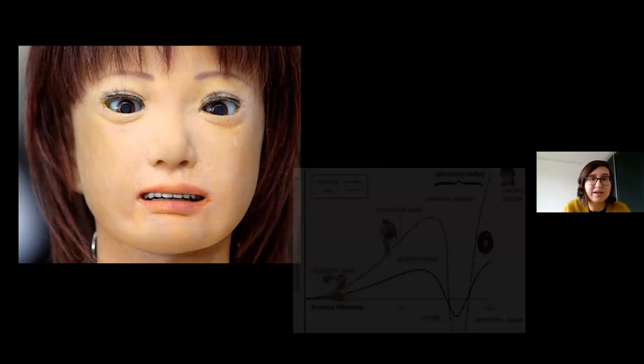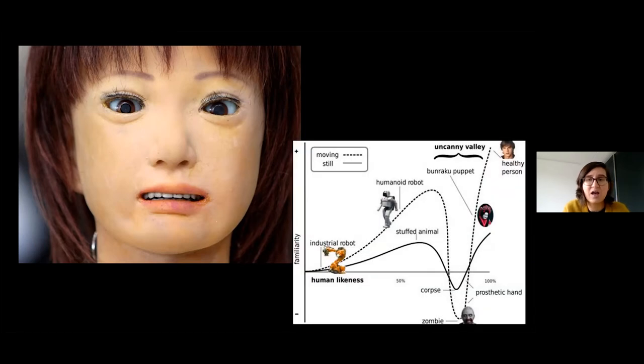So for example, with robots, we saw that when we have imperfect human likeness, people get negative reactions. So their reactions to a face that is imperfect, almost like a human, is negative. We get this eerie sensation. So this is one of the reasons why we would like to have human-like faces for virtual humans.